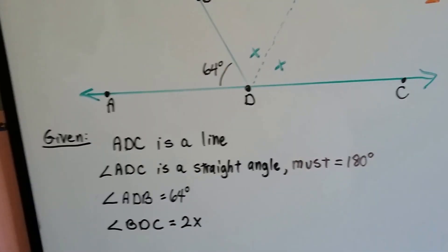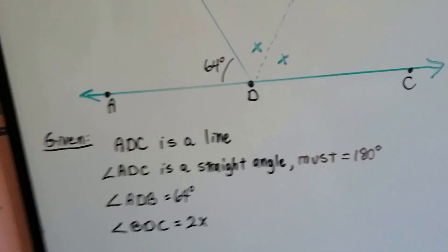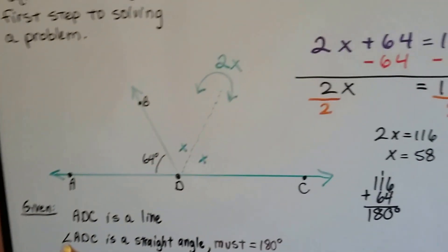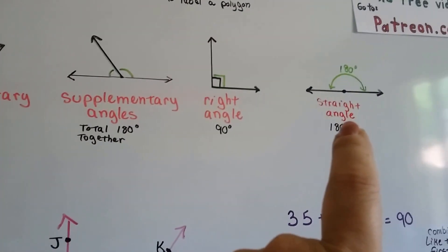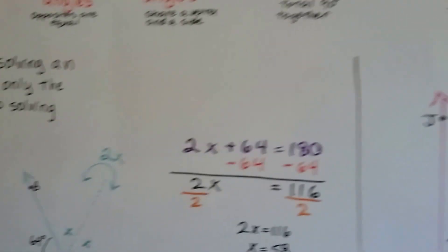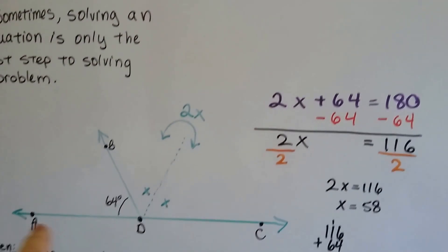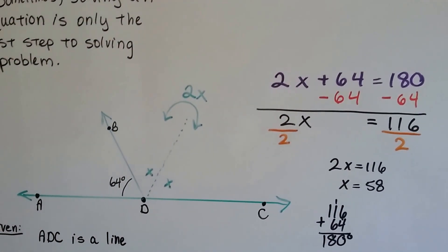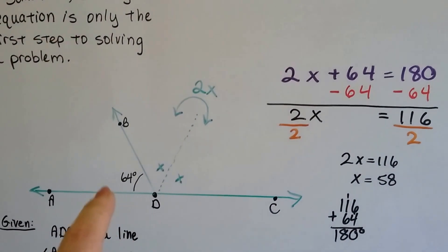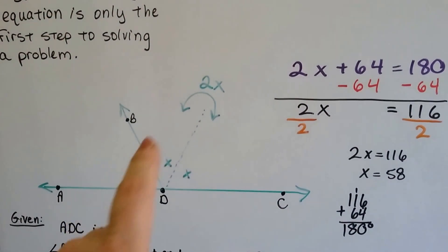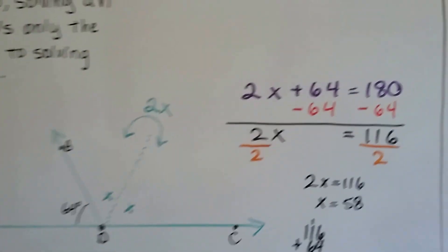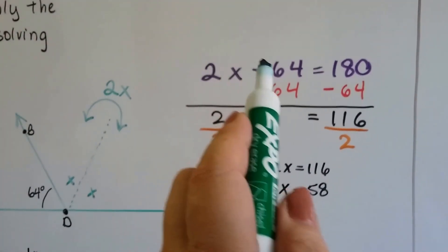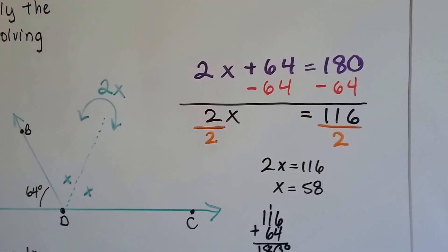So how do we find out what the 2X is? Well, if you watched the previous video and you understand about supplementary angles and straight angles, you'd know that A, D, C must total 180 degrees. So whatever the 64 plus the 2X is must be 180 degrees. So we write our equation: 2X plus 64 equals 180.